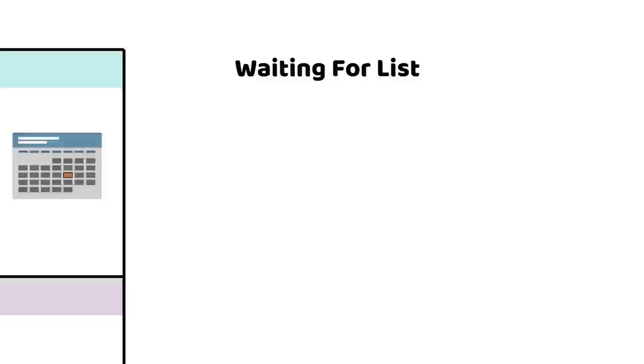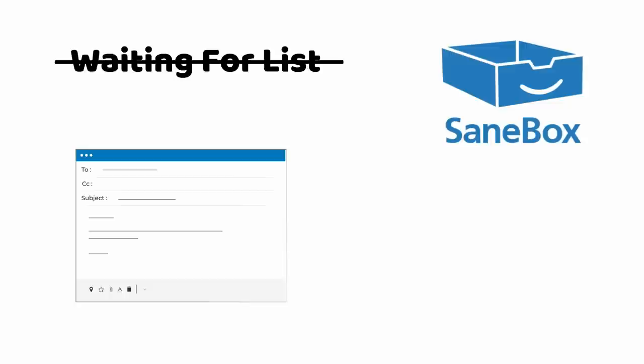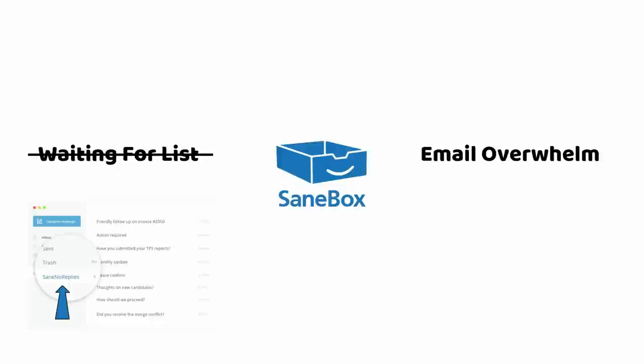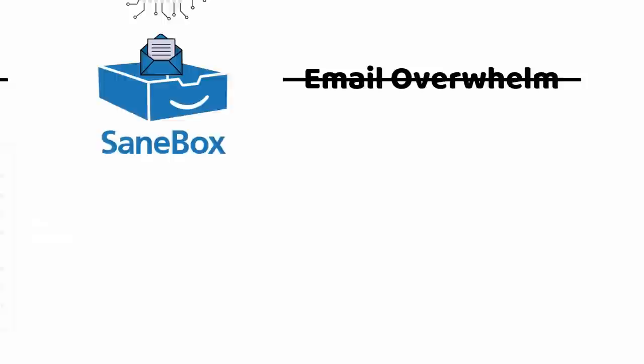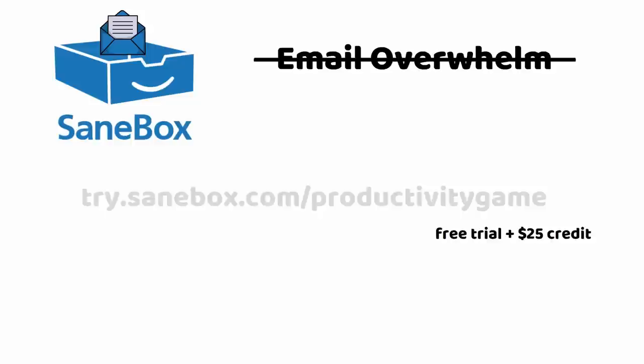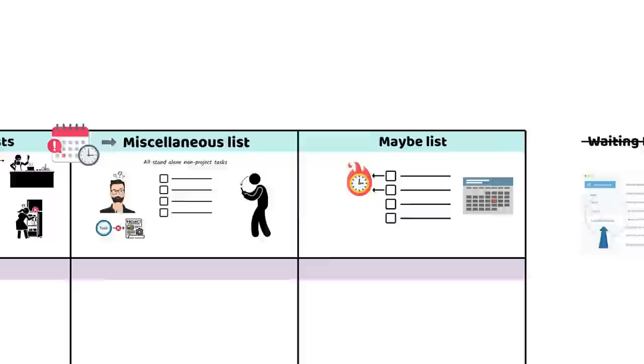Some people like to have a fourth list — a waiting-for list. But to me, a waiting-for list is overkill because I write emails to anyone I need something from and use an email management software called SaneBox to automatically keep track of emails I'm wanting to hear back from in a separate folder. I also use SaneBox to reduce email overwhelm by teaching it to direct incoming emails that don't need my attention today to a later folder. I'm consistently surprised how well SaneBox's AI can distinguish between what matters now and what can wait. SaneBox, who are sponsoring this video, is offering a free trial with a $25 future credit to all Productivity Game viewers — click the link in the description below to try SaneBox.